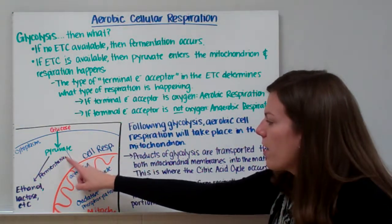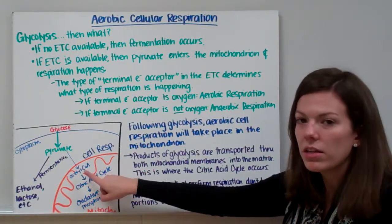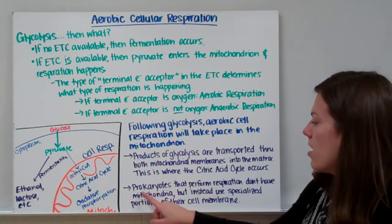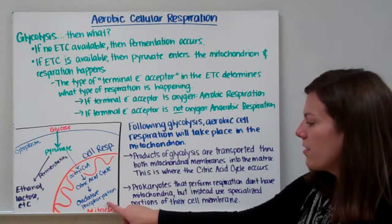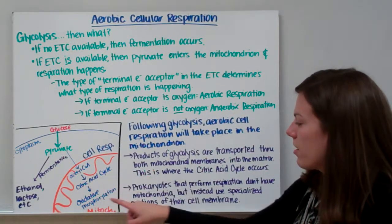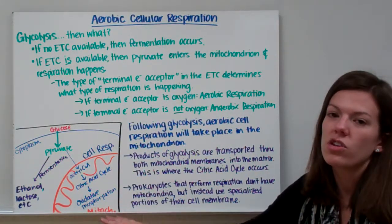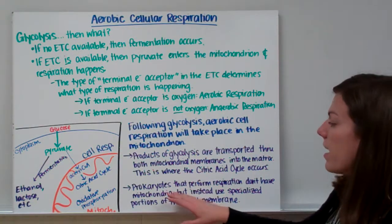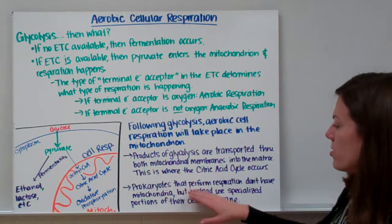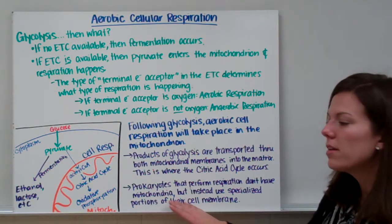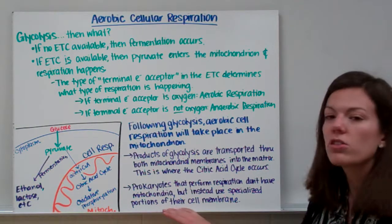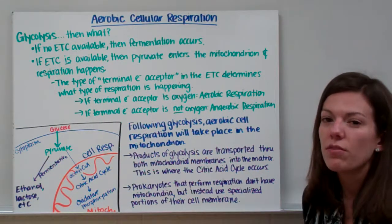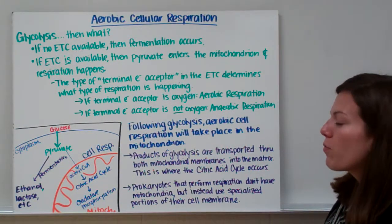We're going to take pyruvate, change it into acetyl-CoA, then go through the citric acid cycle, and then through oxidative phosphorylation — all inside the mitochondrion. Prokaryotes do not have mitochondria or other membrane-bound organelles, but they can still perform respiration. Instead, they use specialized portions of their cell membrane — a folded outer membrane — to perform cellular respiration.